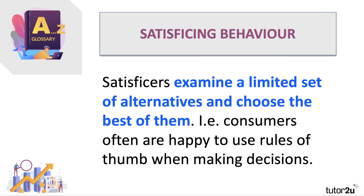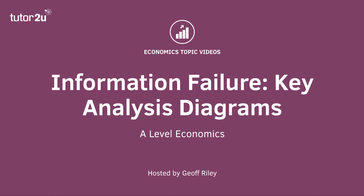Consumers are often happy to use rules of thumb, sometimes called heuristics, when making decisions. I don't want the best burger in the world — I just want a burger like the one I had last time. Those kinds of choices are satisficing decisions, and it's an important aspect of understanding the economics of information failure.